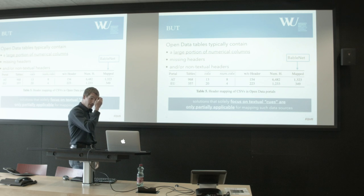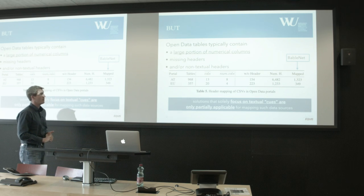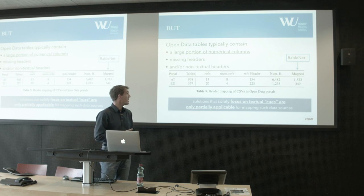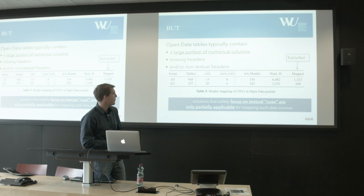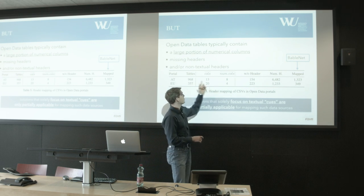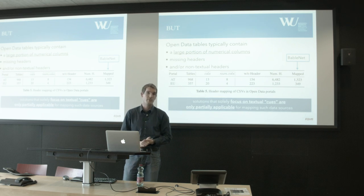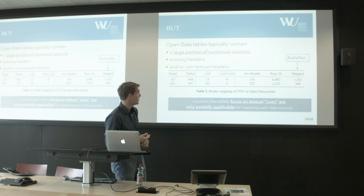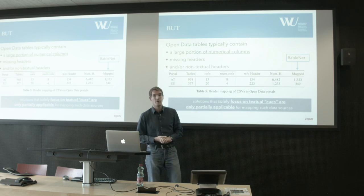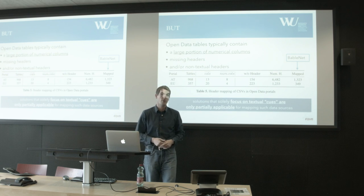When we look at open data CSV files, we find that a large portion of these columns are numerical, and we have missing headers or non-textual headers — some are just alphabetic IDs. In the Austrian portal, half of the columns are numbers, so you cannot do entity matching to get an idea of what they're about.